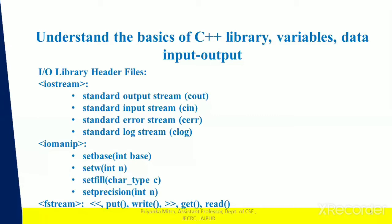The standard error stream, also called the unbuffered standard error stream: cerr is an instance of the ostream class and is attached to the standard error device, which is also a display screen, but the cerr object is unbuffered. C++ cerr is used to output errors. The standard log stream, which is the buffered standard error stream: clog is an instance of the ostream class and is attached to the standard error device, which is also a display screen, but clog is buffered. Unlike cerr, with clog the error is first inserted into a buffer and stored until the buffer is fully filled.